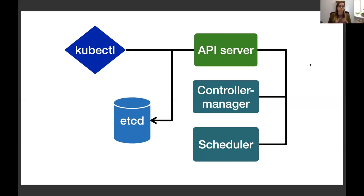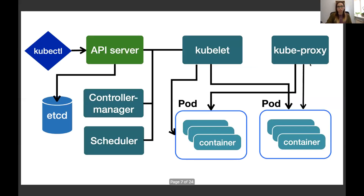There is also a scheduler. The controller manager brings in the scheduler to actually create objects if they don't exist yet. So for deploying pods, you would issue a kubectl create command with a YAML file. The API server validates with etcd, and then the controller manager detects that the desired state is two pods while the actual state is zero, so it asks the scheduler to schedule those pods.